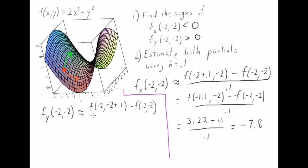And let's not forget to divide by 0.1. So this is going to be f(-2, -1.9) minus f(-2, -2), all over 0.1.